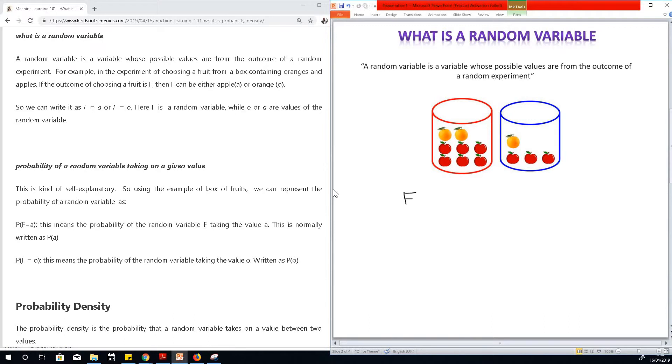Either an apple or an orange, because the two possible values of taking randomly a fruit from the red box is either an apple or an orange. So it means that f could have a value of f equals a or f equals o. So in the first one, f is an apple. In the second one, f is an orange.